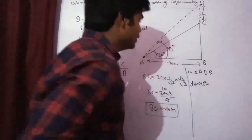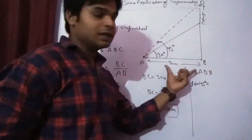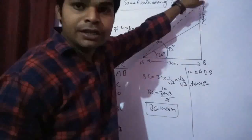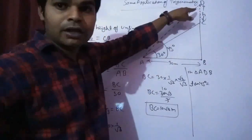Again AB is the base and now the perpendicular is BD.